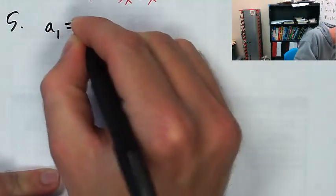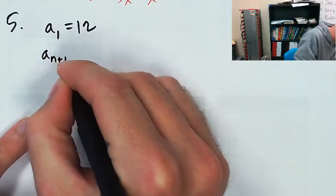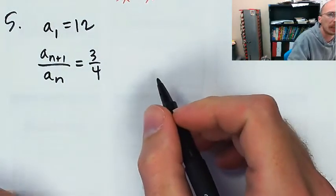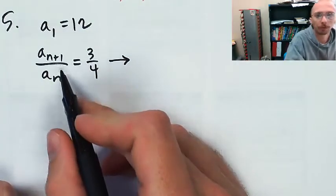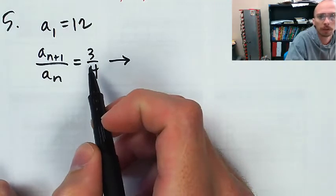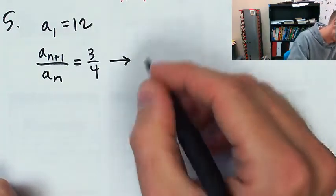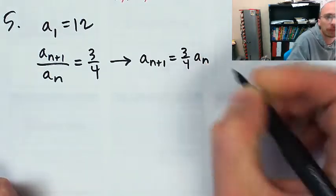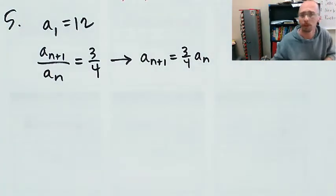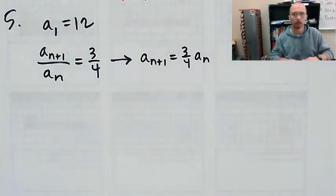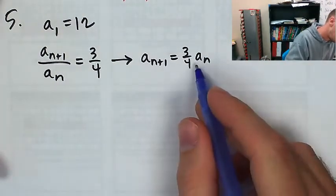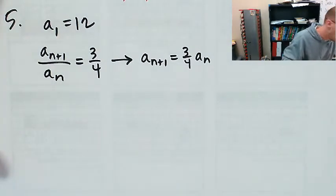Number five: a_n is a sequence with a_1 equals 12 and a_{n+1} divided by a_n equals 3/4. This means there's a constant ratio between consecutive terms of 3/4, so it's a geometric sequence with common ratio 3/4. They're asking for the sum from n equals 1 to infinity of a_n.